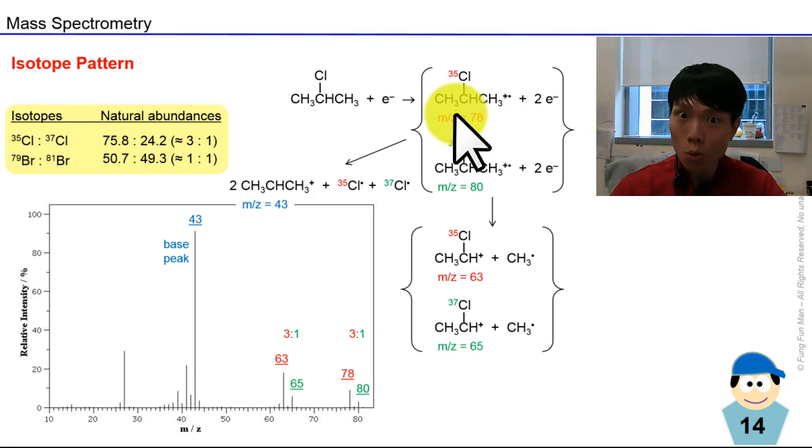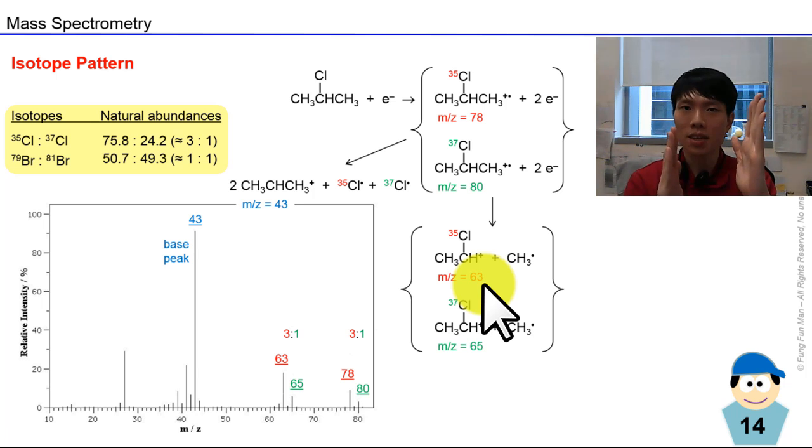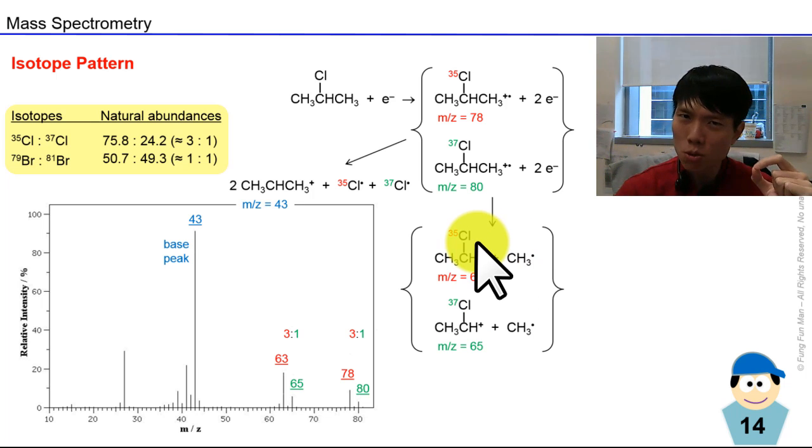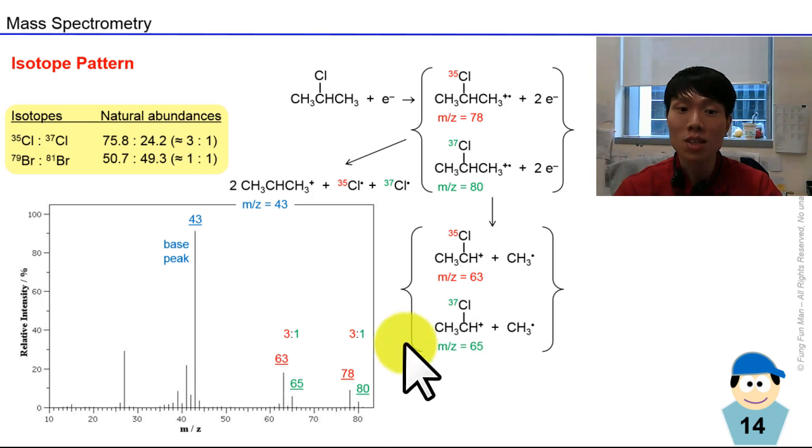When we cut away the methyl group and the remaining part still contains chlorine, we see a twin peak, 3:1. Three parts will be for the lower m/z value because they still contain chlorine, and chlorine-35 has a 3:1 probability against chlorine-37. So you see this pattern replicates as long as you have chlorine present.